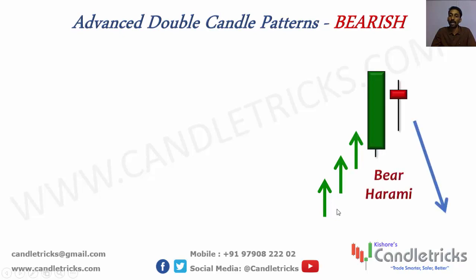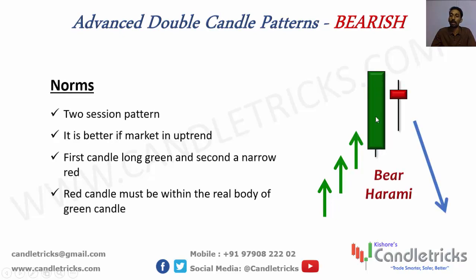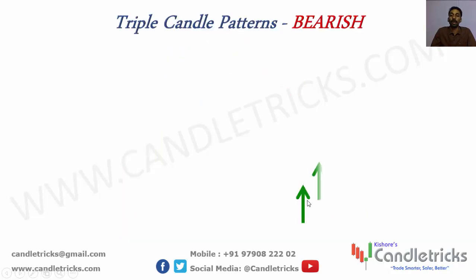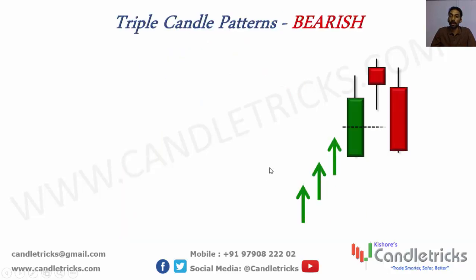Next formation is bear harami. After upward movement, there is a long green candle then a small red body — the red body must be inside the first candle's range. We call it bear harami — clear sign for trend reversal from upward to downward momentum. Example: after upward momentum, long green candle followed by small red body inside the previous candle's range; entry is at the low, and price falls.